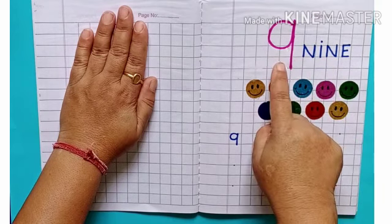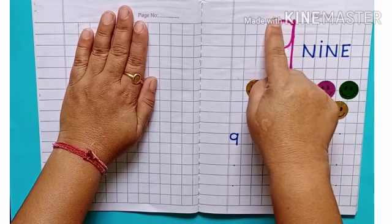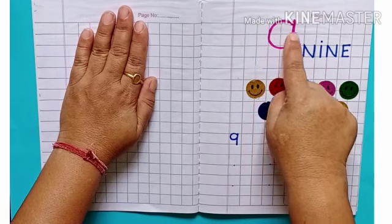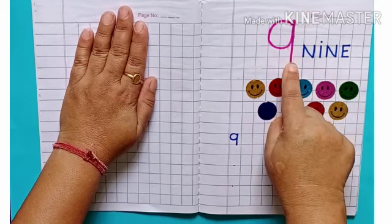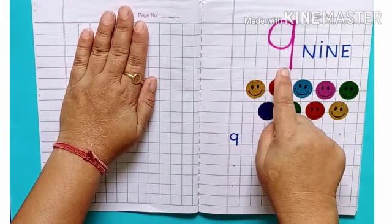Key finger on nine: make C, go up, come down, make standing line. Nine. Here I have pasted smileys.